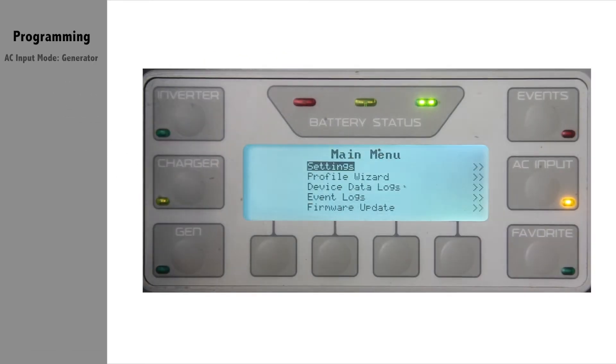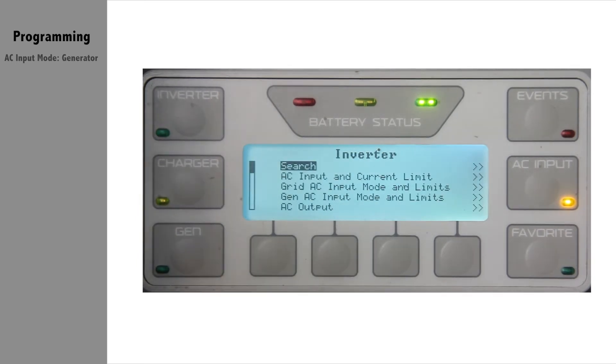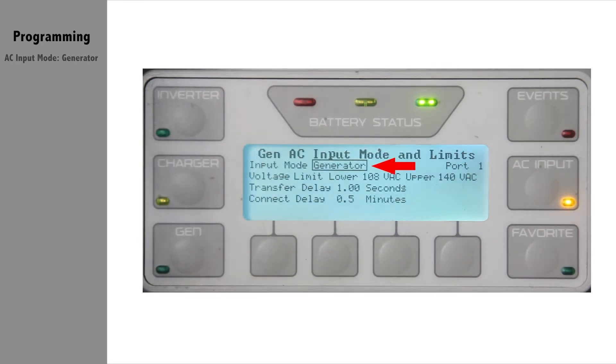To check, from your Mate 3, go to lock, settings, inverter, gen AC input mode and limits. Your input mode will need to be set to generator.